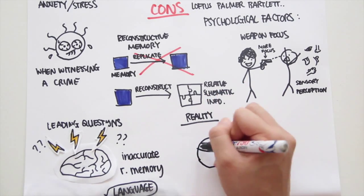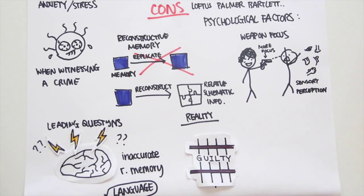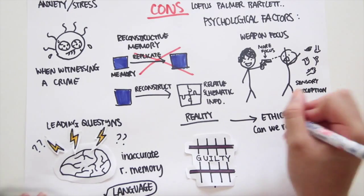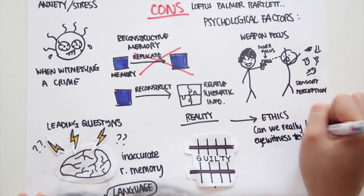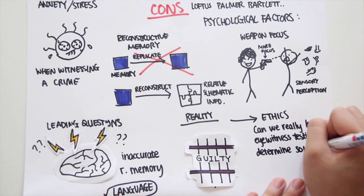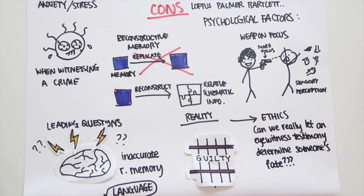Additionally, cases of mistaken eyewitness identification in real life, for example a court case, often have very real and serious consequences. This can relate strongly to ethics. Can we really allow an eyewitness testimony that may be incorrect to ruin someone's career or even put them in jail?